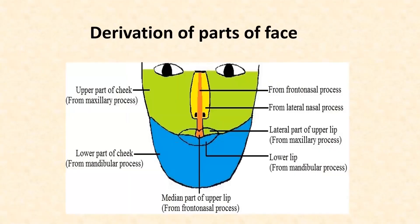This slide shows the derivatives of various parts of the face. The upper part of the cheek is formed from the maxillary process, while the lower part of the cheek is formed from the mandibular process. The lateral part of the upper lip is formed from the maxillary process, the median part of the upper lip from the frontonasal process, and the lower lip in its entirety from the mandibular process.